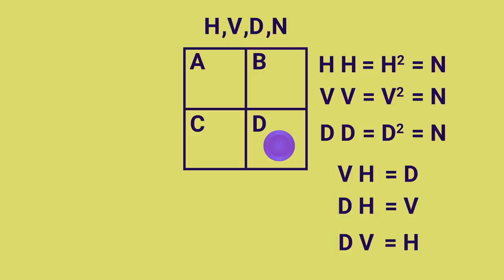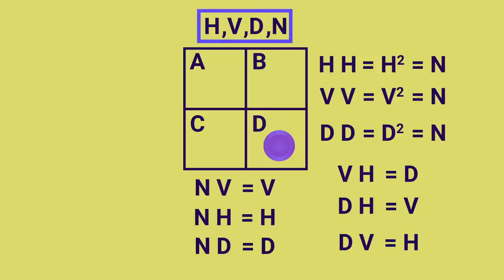Then lastly, we just have to note that doing some move along with doing nothing is the same as, well, just doing that move. So, these four possible moves, given everything we've discussed, form the Klein-4 group.